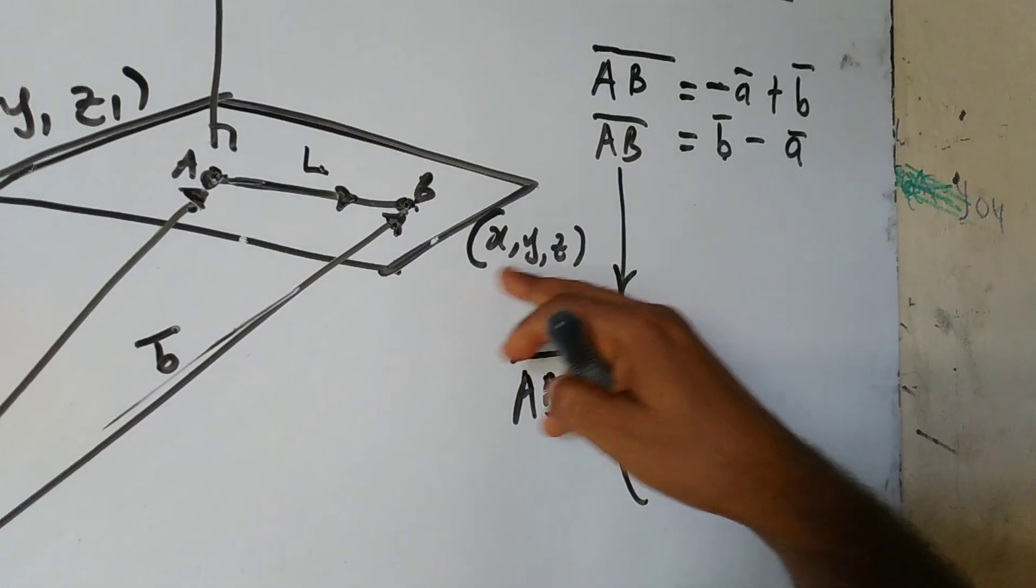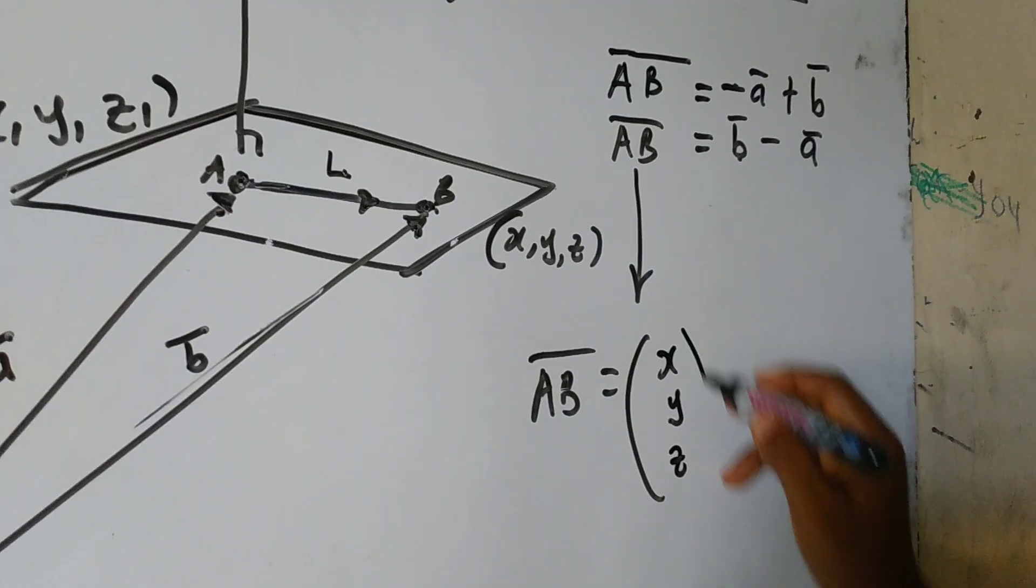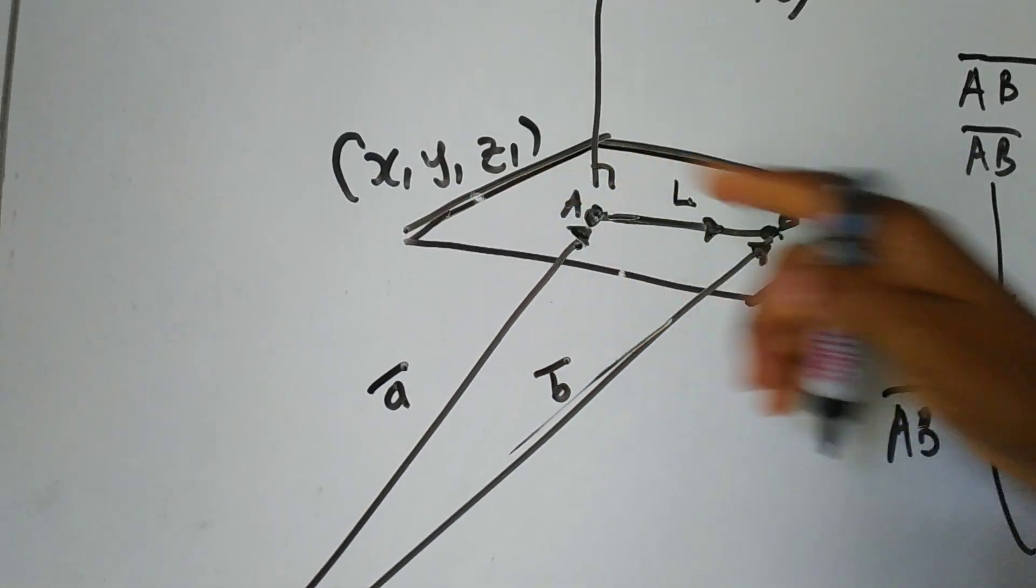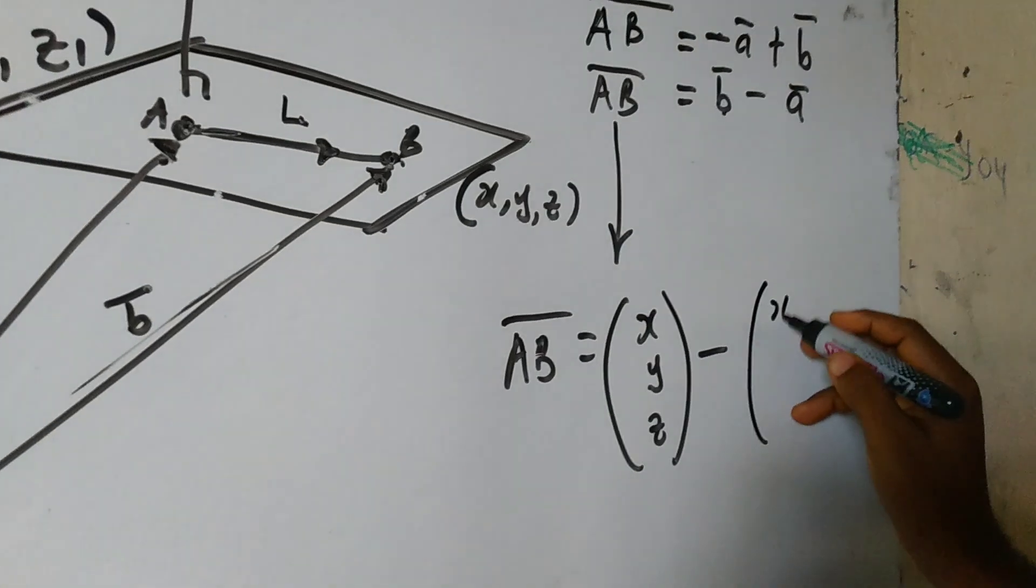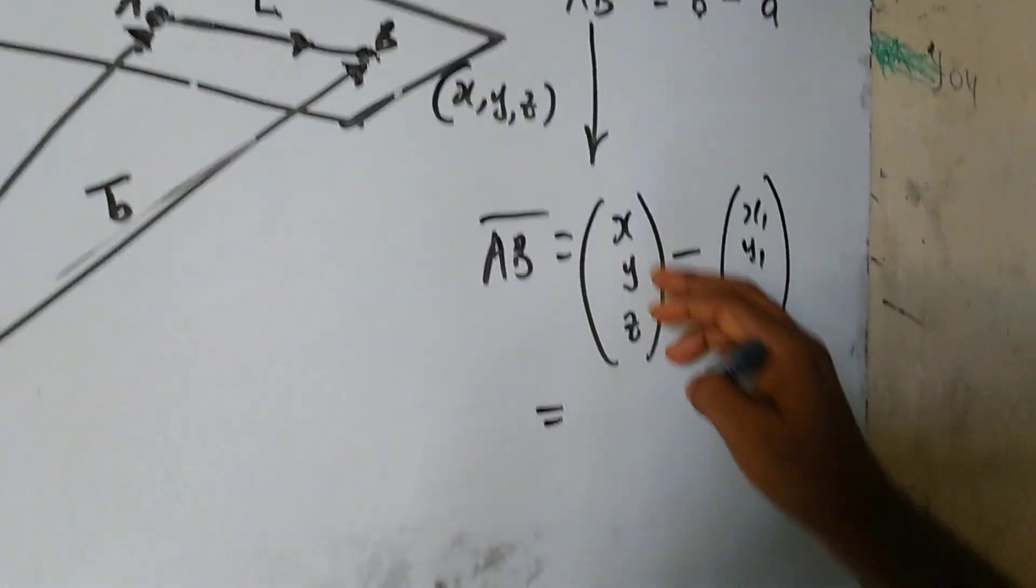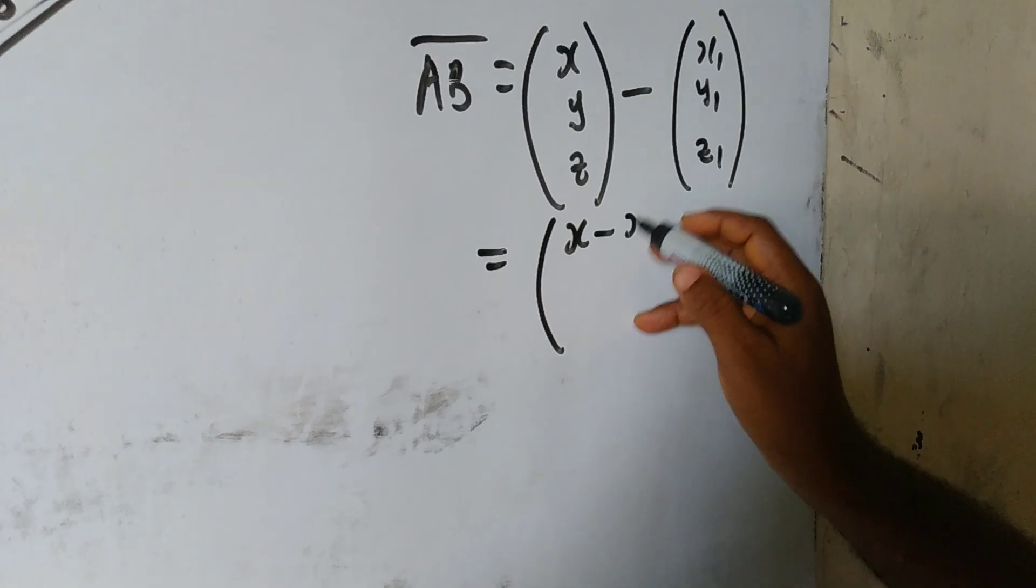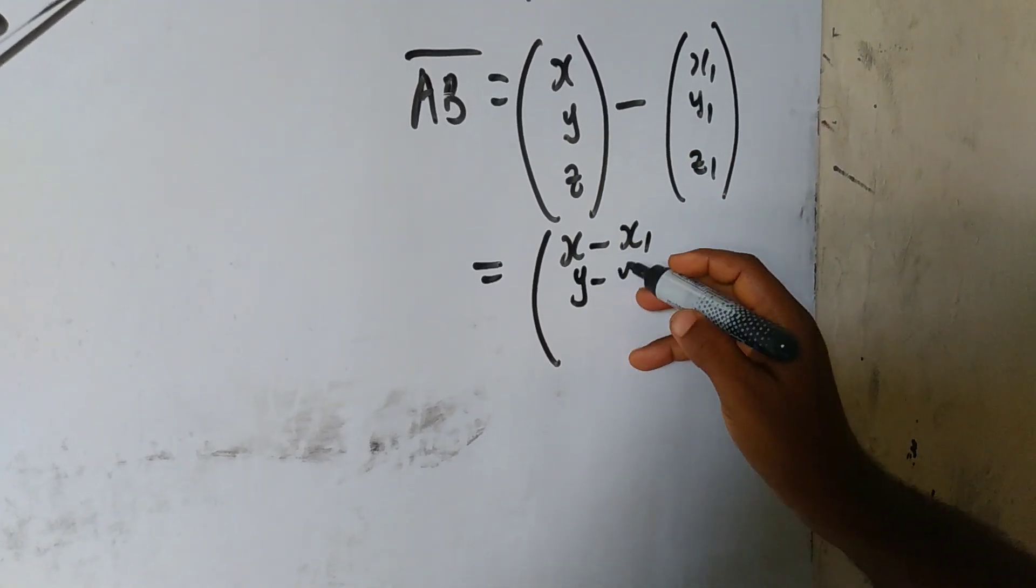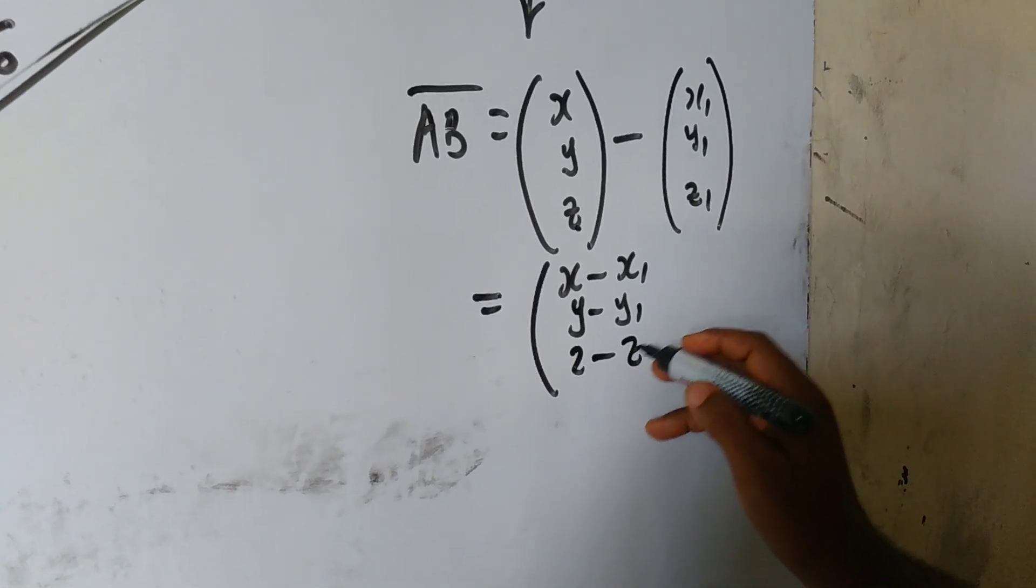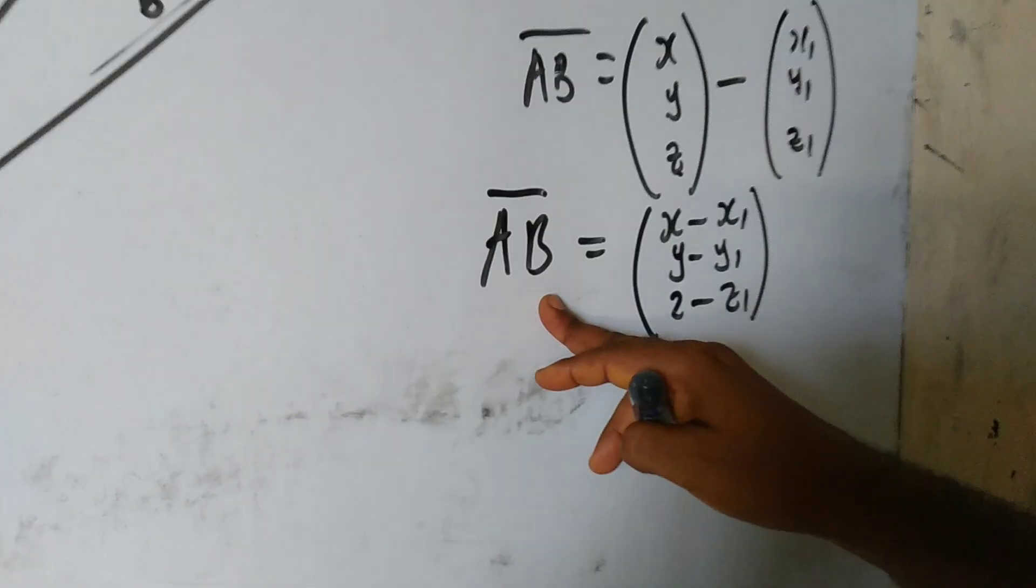This vector AB can be rewritten. For my vector B, I have this XYZ. So, I can write it as XYZ. Take away vector A is what I have here, X1, Y1, Z1. So, we can express each of these so that we have this expression, X take away X1, Y take away Y1, and Z take away Z1. So, difference in the coordinates of the two vectors. That is my vector AB.